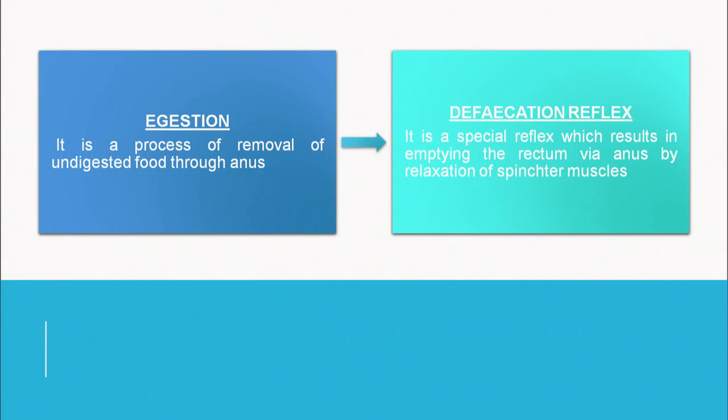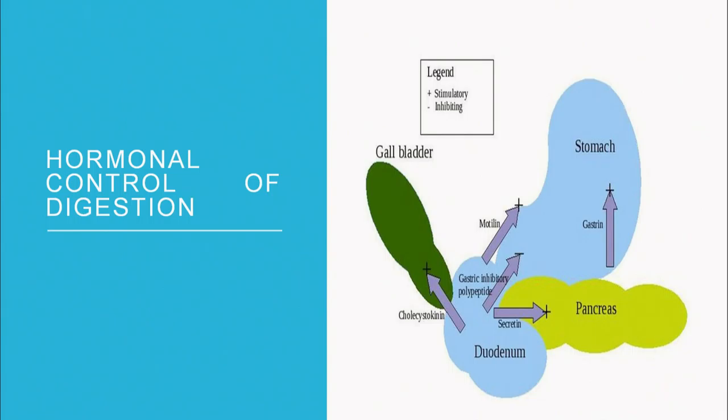The last step of digestion is egestion. Egestion is the process of removal of undigested food through the anus, and it happens through a defecation reflex — a special reflex that results in emptying the rectum via the anus by the relaxation of the sphincter muscles present near the anal opening.